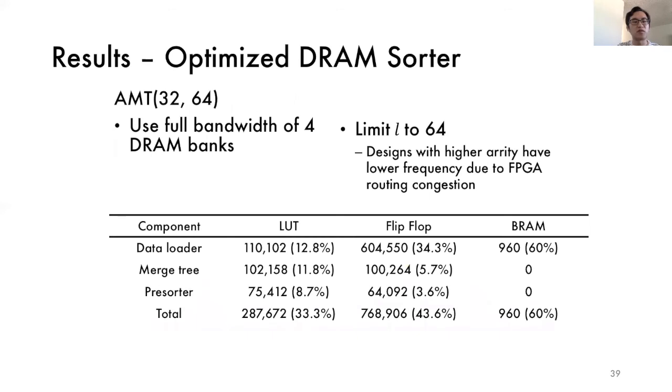So as a result, the strategy of choosing optimized single AMT configuration is always as below. First, we choose a minimum tree throughput P that saturates the DRAM bandwidth. Then we choose a maximum L that on-chip resources allows. The best performing design is AMT P equal to 32, L equal to 64, which corresponds to the case where all of the four DRAM banks are present. The resource utilization is also attached. Please note that although L can be even larger, here we limit L to be 64 since design with smaller leaves have lower frequencies due to the FPGA routing congestion.